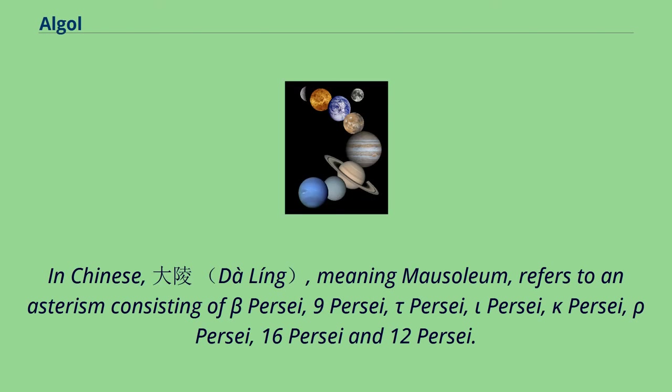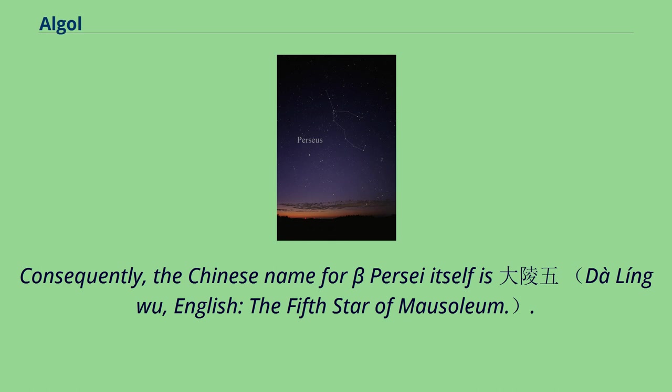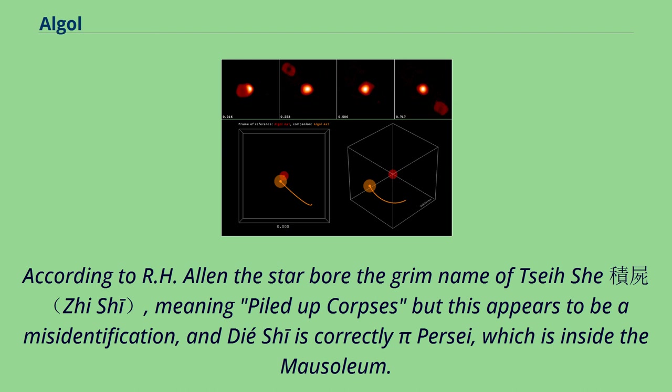In Chinese, meaning mausoleum, refers to an asterism consisting of Beta Persei, 9 Persei, Tau Persei, Iota Persei, Kappa Persei, Rho Persei, 16 Persei and 12 Persei. Consequently, the Chinese name for Beta Persei itself is Dà Líng Wǔ, English: The Fifth Star of Mausoleum. According to R.H. Allen the star bore the grim name of Tseih She, meaning piled up corpses, but this appears to be a misidentification, and Tseih She is correctly Pi Persei, which is inside the mausoleum.